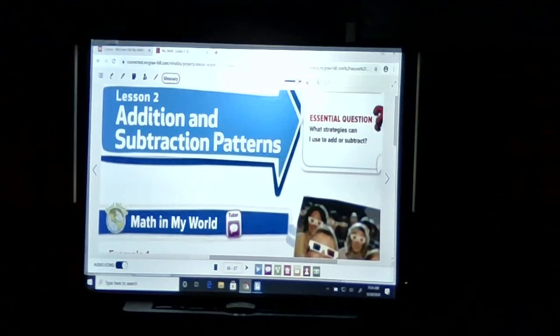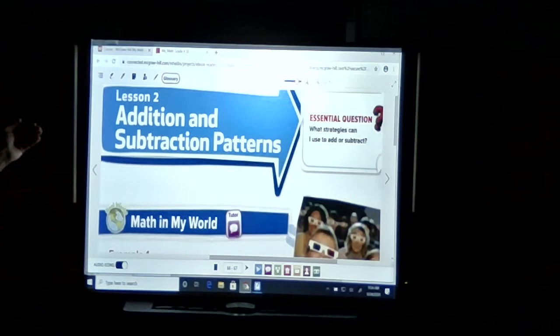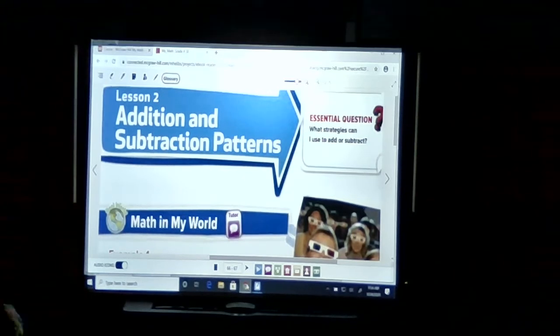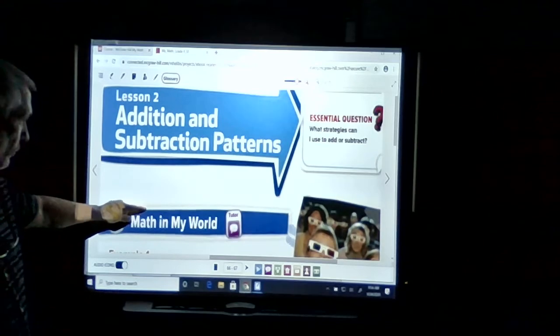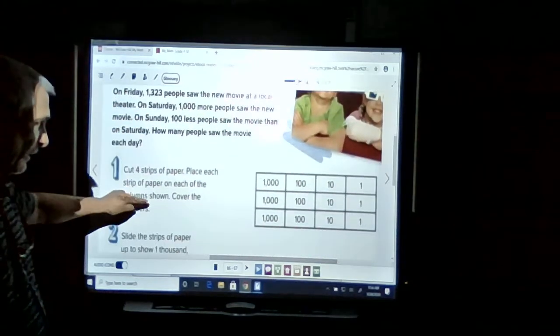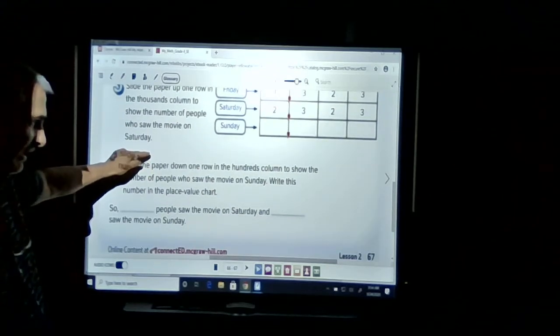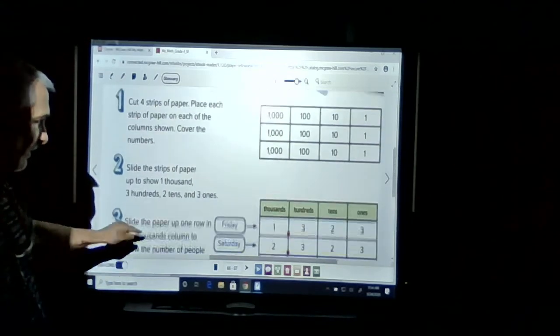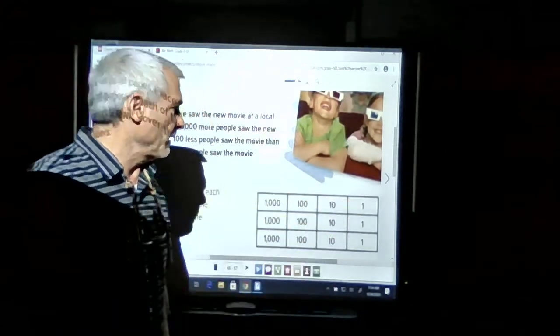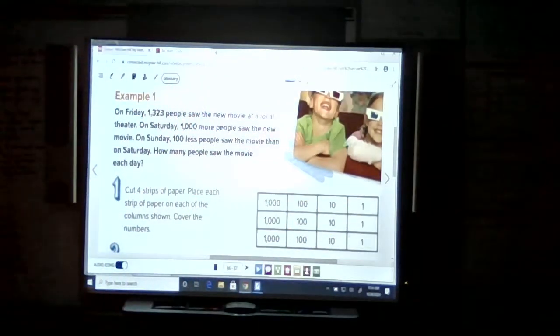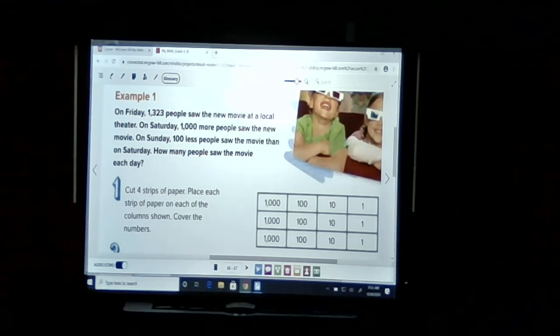Fourth grade, Lesson 2, Chapter 2, page 67. Have your books ready, and we're going to look at adding one to any of the digits. Could be one, could be a hundred, could be one thousand, could be one million. Four strips of paper are going to be needed. You can take a minute, pause, and get four strips of paper ready.